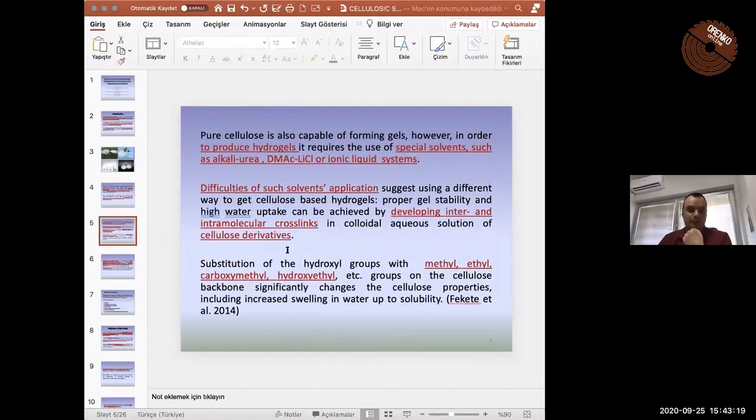To produce hydrogels from pure cellulose, spatial solvents such as dimethyl acetamide, lithium chloride, or ionic liquid systems. But these spatial solvents have some disadvantages such as they are really expensive chemicals. Cellulose, because of sterical problems of cellulose, cellulose derivatives are mostly preferred for production of hydrogels.